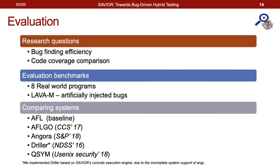In our evaluation, we aim to answer the research question of how Xavier's bug-finding efficiency and code coverage compare with other coverage-driven testing techniques. We use two benchmarks: the Lava-M benchmark and eight real-world benchmark programs commonly used in fuzzer evaluations. We compare Xavier with AFL as the baseline, AFL-GO as a representative of directed fuzzing, Angora as a fuzzer boosted by gradient descent search techniques, and two recent hybrid testing frameworks, Driller and QSYM.